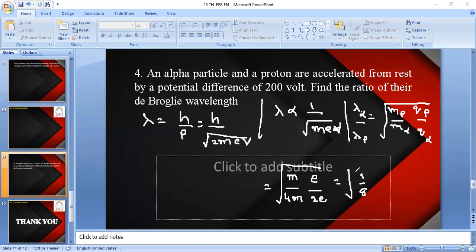So it is 1 by 8. Lambda of De Broglie wavelength of alpha particle by De Broglie wavelength of proton equals 1 by root 8.